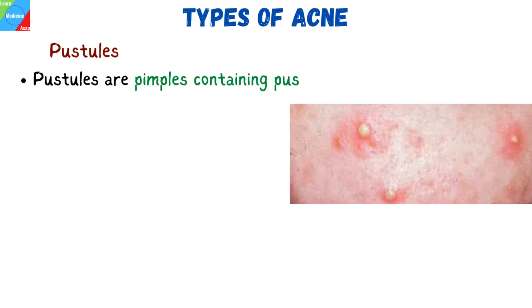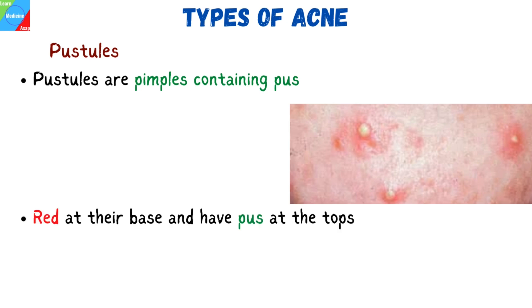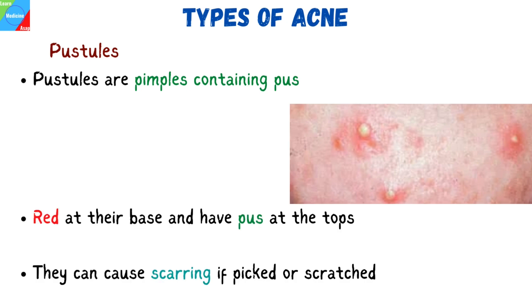Pustules are basically pimples containing pus. They look like whiteheads. They are red at their base and have pus at the tops. They can cause scarring if picked or scratched.